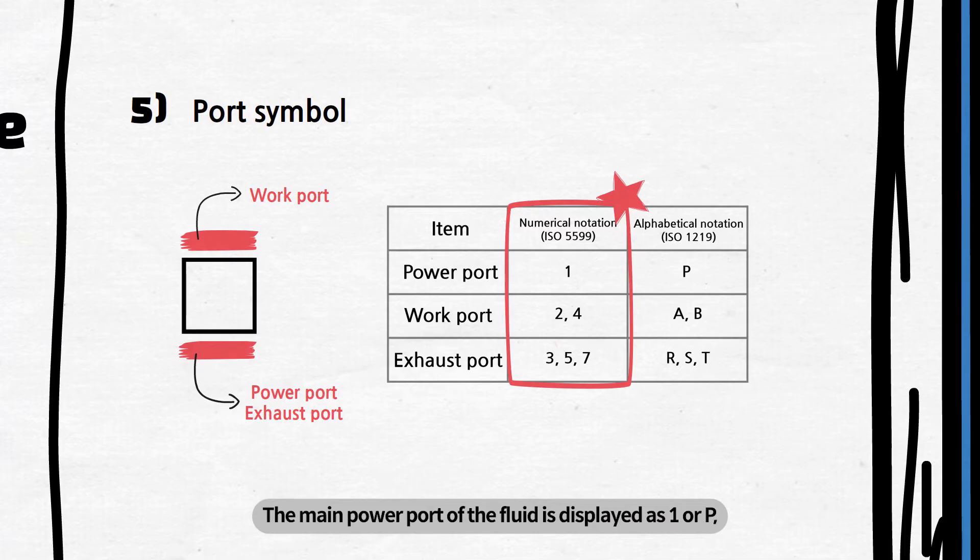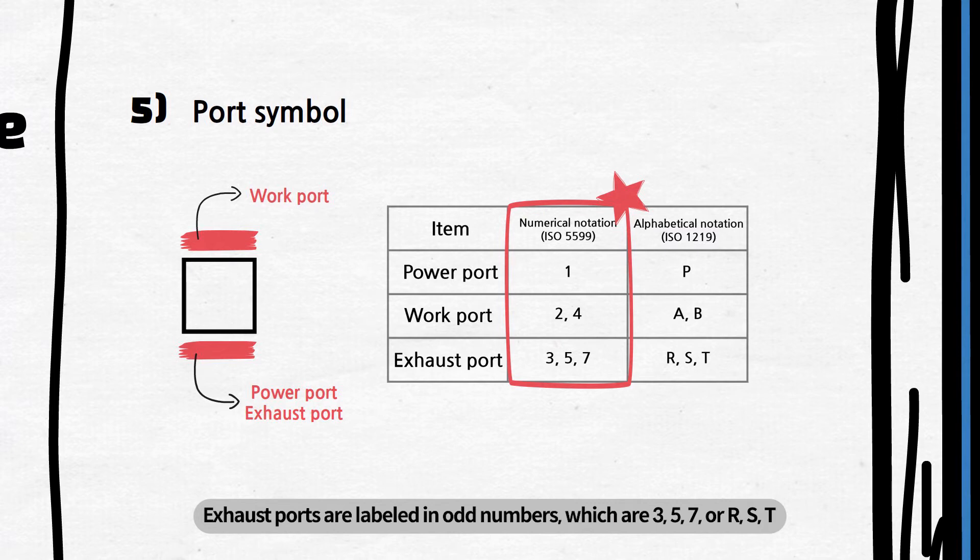The main power port of the fluid is displayed as 1 or P, while the working port shall be in an even number, which is 2, 4, or A, B. Exhaust ports are labeled in odd numbers, which are 3, 5, 7, or R, S, T.